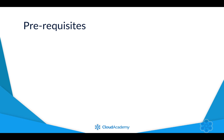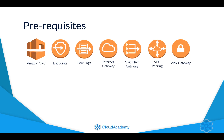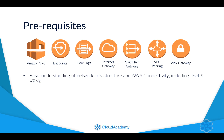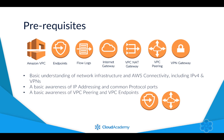There are a number of prerequisites for this course. As this is not a beginner's course to AWS, it assumes you have a basic understanding of some AWS services, specifically to do with a VPC. You should also have a basic understanding of network infrastructure and AWS connectivity, including a basic level understanding of IPv4 and VPNs, common protocols and IP addressing, and a basic awareness of VPC peering and VPC endpoints.